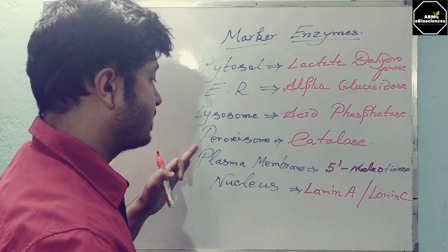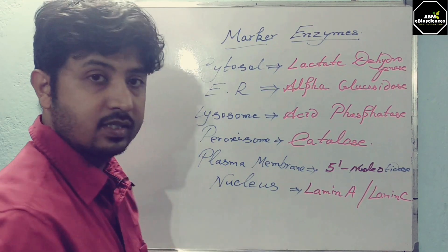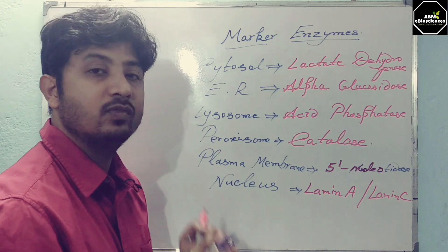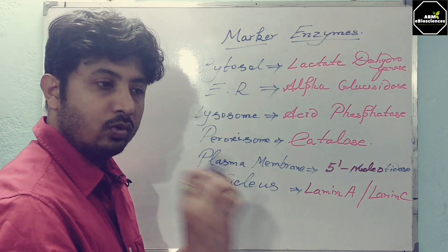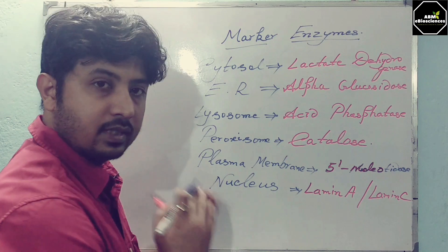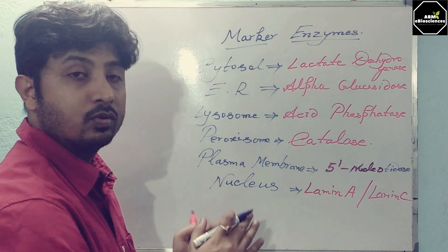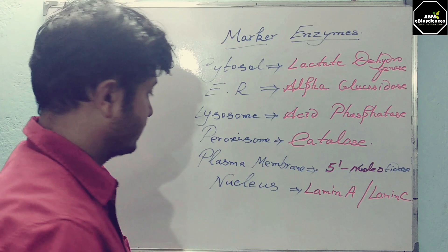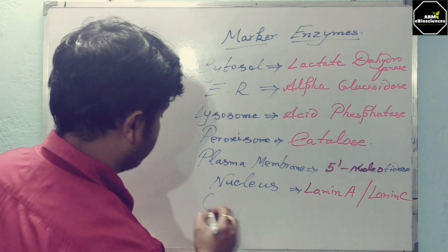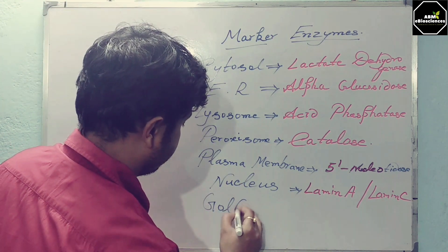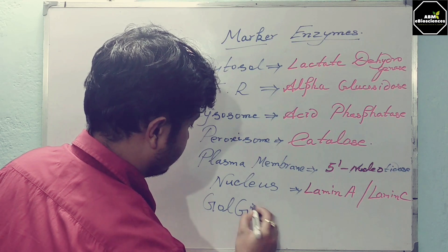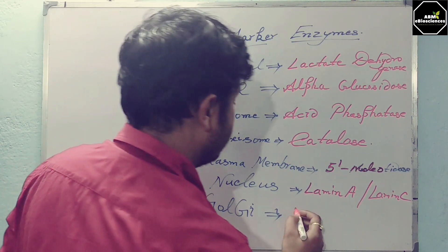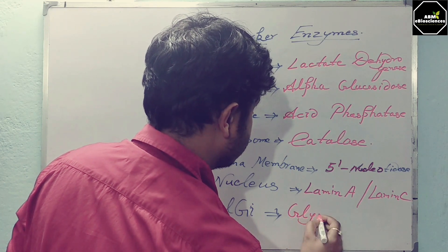All these are subcomponents or organelles residing within a cell. When working with a particular subcomponent and wanting to isolate it, you must confirm the marker enzyme. Next is the Golgi apparatus — for Golgi, you can use glycosyl transferase as the marker enzyme.